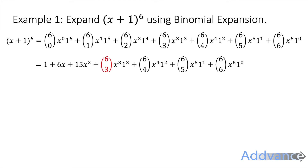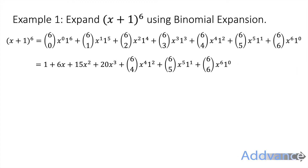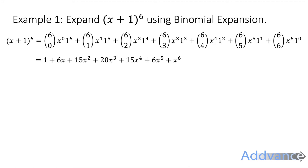6C3 = 20 and 1³ = 1, so that term is 20x³. Continuing, you would get 15x⁴, 6x⁵, and x⁶. In your own time, check that you get exactly these numbers — that would be good practice for this topic.